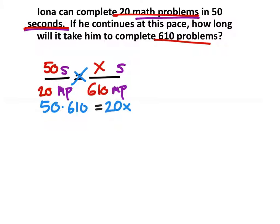So now we have this equation, which we can solve. Let's go ahead and do 50 times 610 first. And what would that be? 50 times 610.